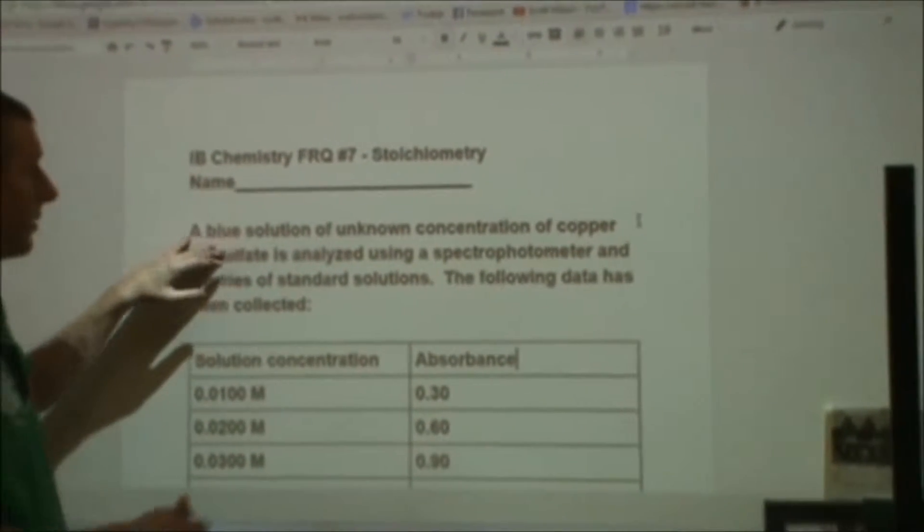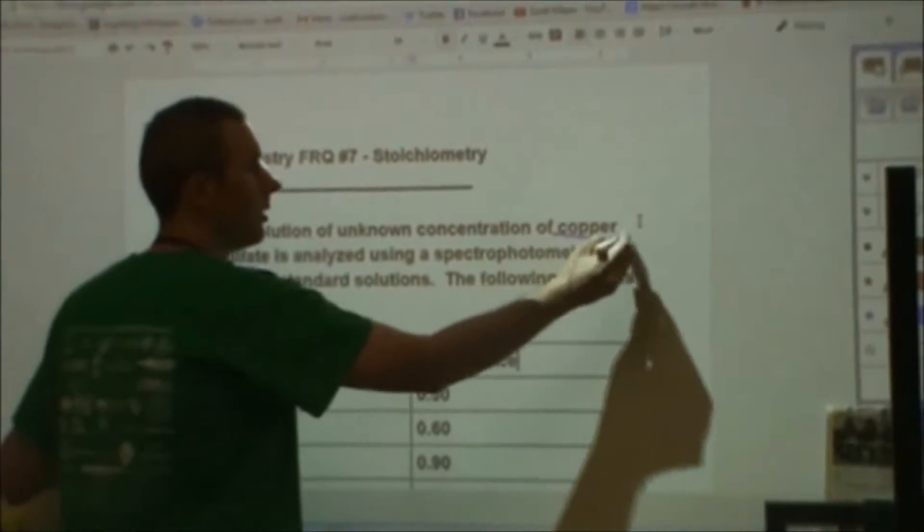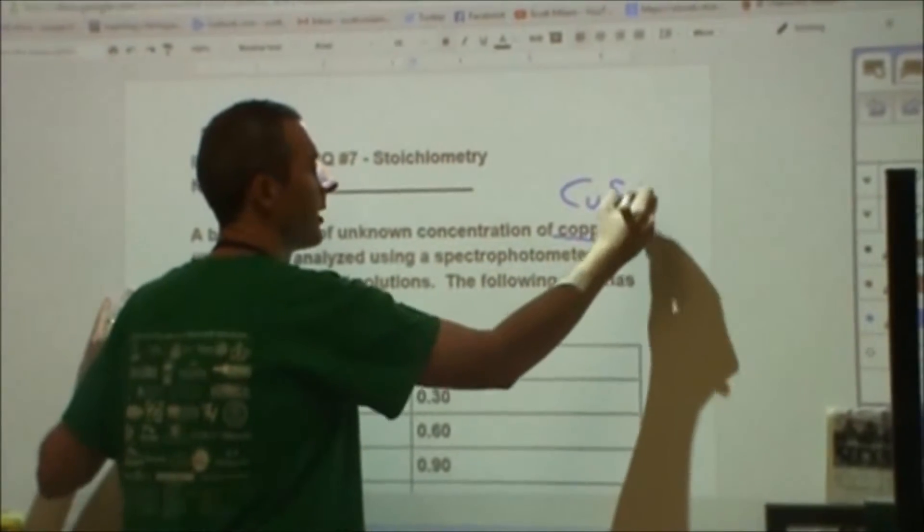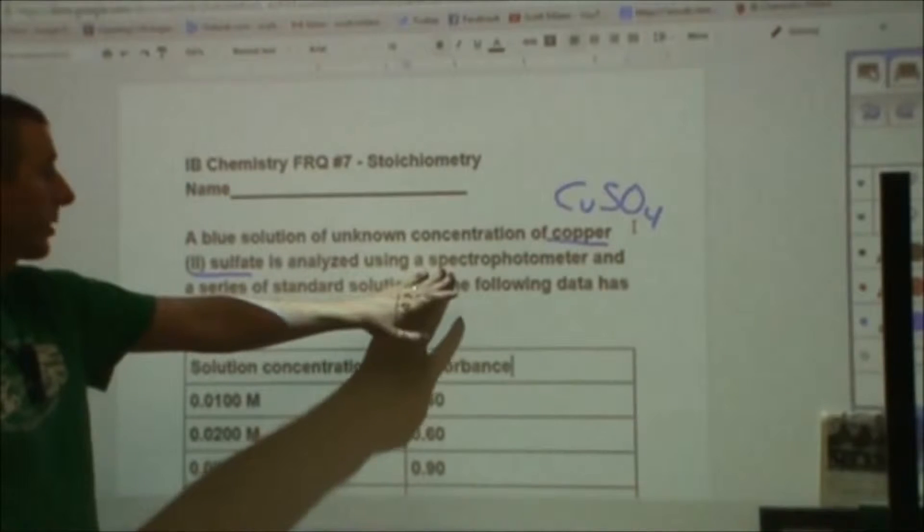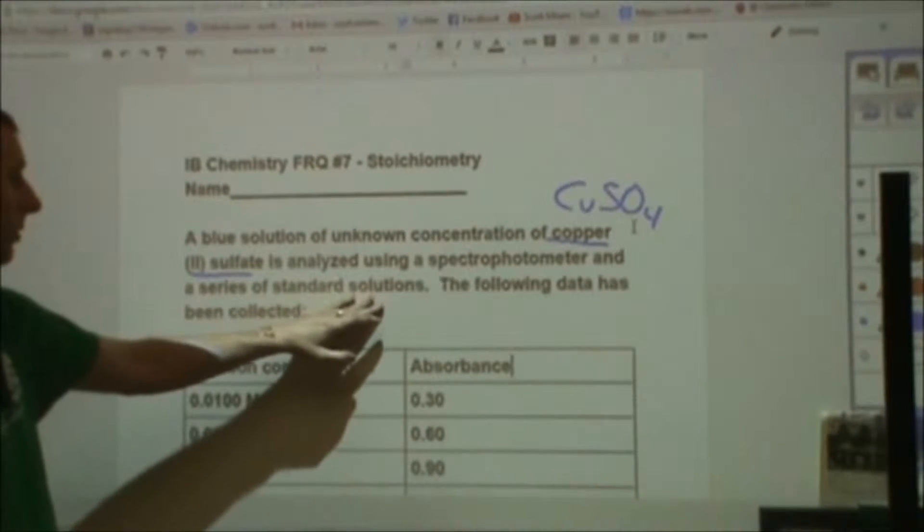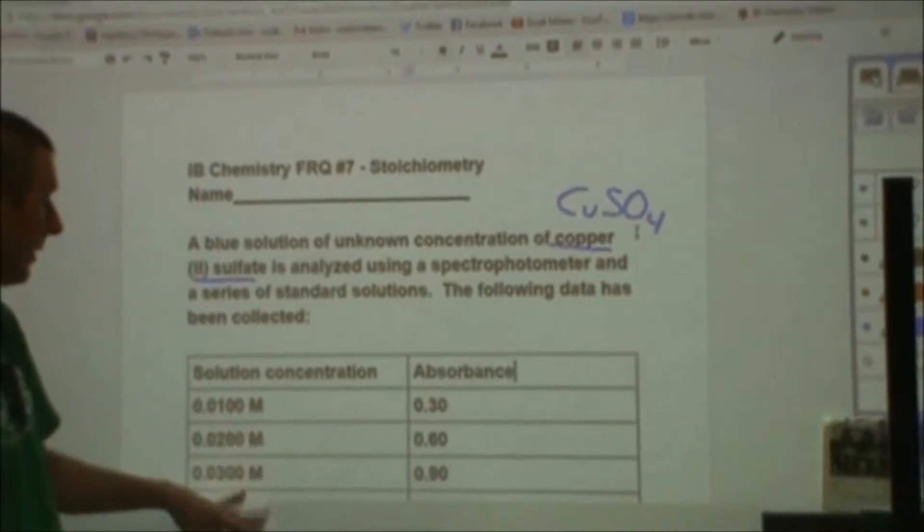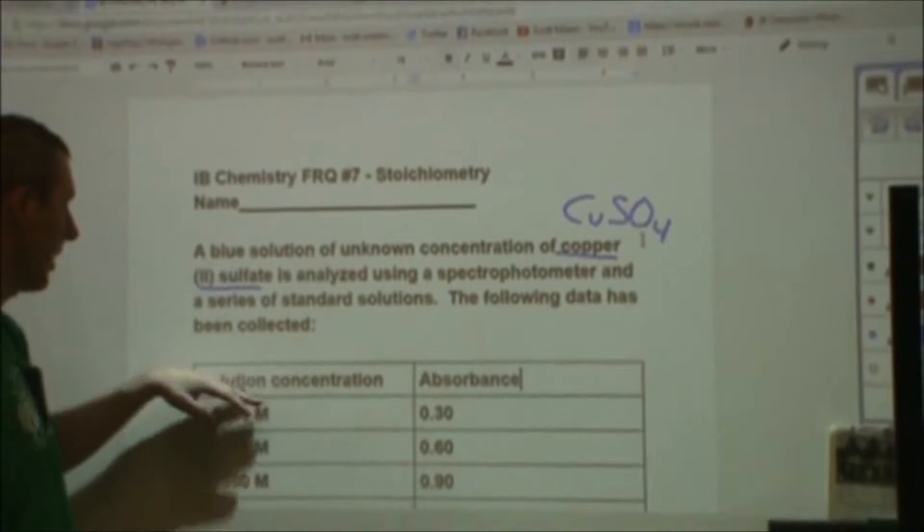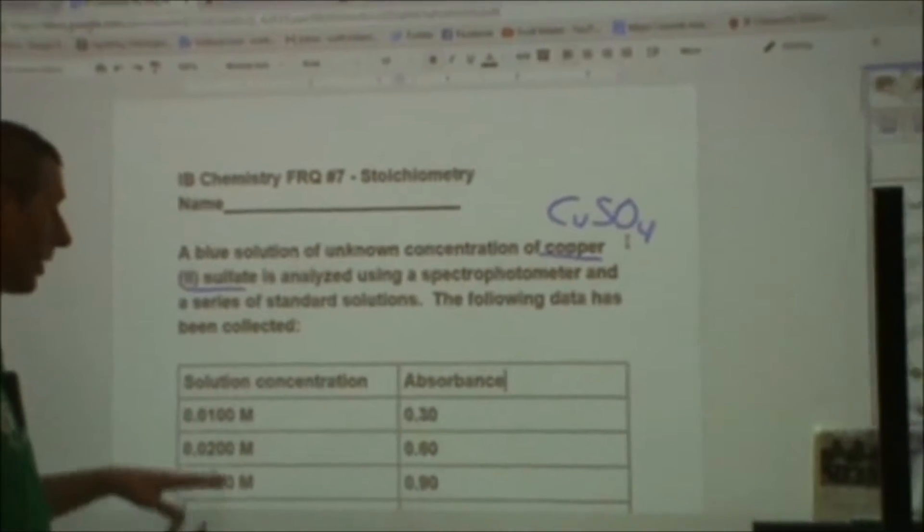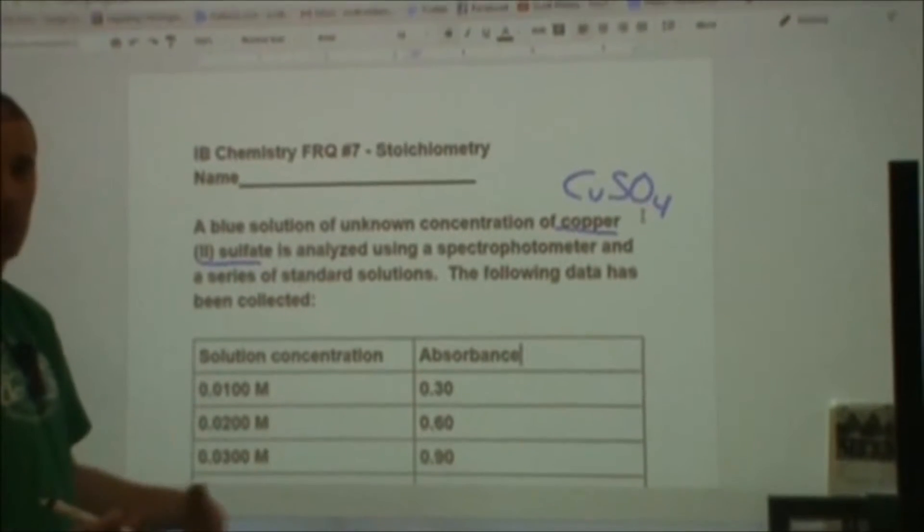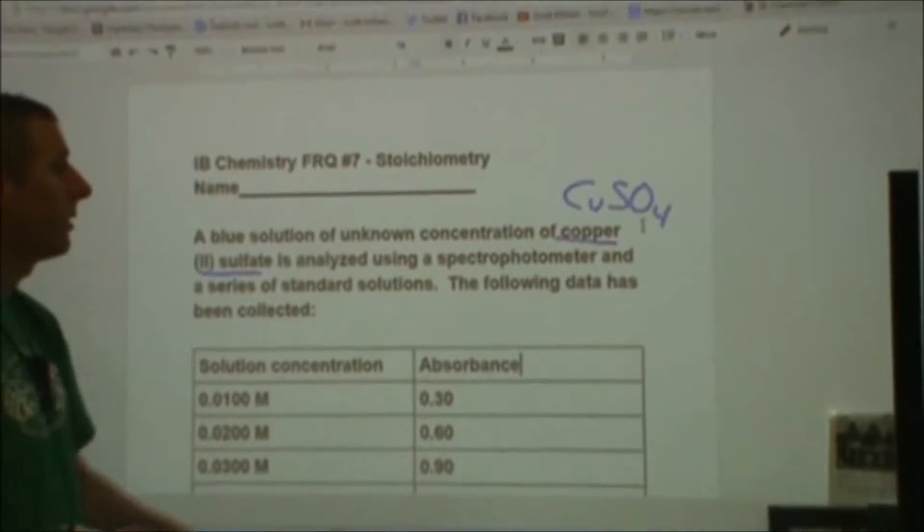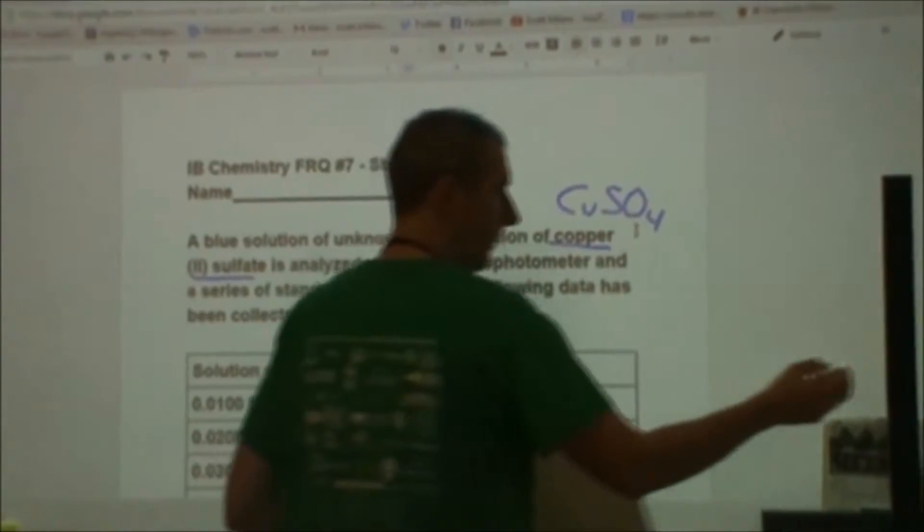What we're looking at here is a copper(II) sulfate solution. We do not know the concentration of it. We're going to try and find that using a spectrophotometer and some standard solutions. We collected data on absorbance and concentration and we're going to use that to figure out what our unknown concentration is by what its absorbance is and how it falls into these three.